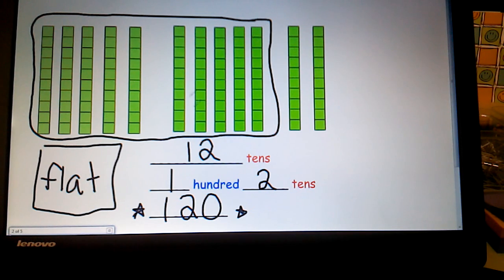If students aren't sure, please prompt them to go back and count by tens. Ten, twenty, thirty, forty, fifty, sixty, seventy, eighty, ninety, a hundred. That's our flat. A hundred and ten and a hundred and twenty.